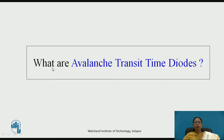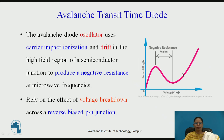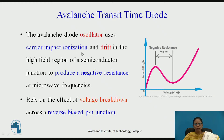Before we move ahead, let us talk about what are avalanche transit time diodes. The name itself consists of two terms: avalanche and transit time. Avalanche diodes are nothing but oscillators which use impact carrier impact ionization — that is the avalanche effect — and the drift space, that is the transit time effect, for producing negative resistance.